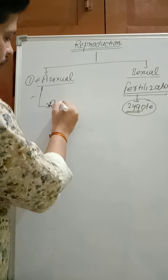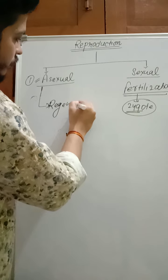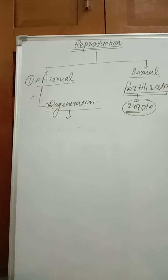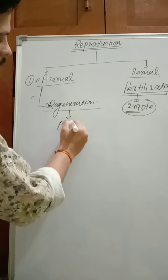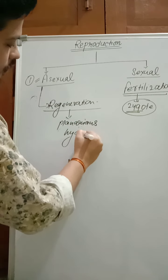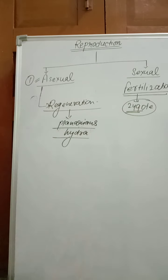Another method of asexual reproduction is regeneration. A detached part of the body is able to develop into a new individual. That is called regeneration. Regeneration is mainly present in planaria and also in hydra. They show the ability to develop into a new individual — that process is called regeneration.